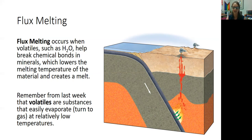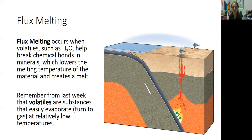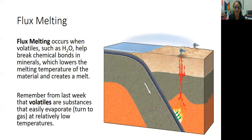This happens at subduction zones, where oceanic plates are subducting beneath continental plates and ocean water is being subducted and brought down deep into the mantle. When the ocean water reaches the mantle and interacts with those mantle rocks, it can cause those mantle rocks to melt. Think of water being fluxed in, down into the mantle, causing melting.